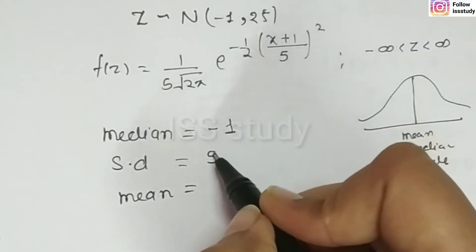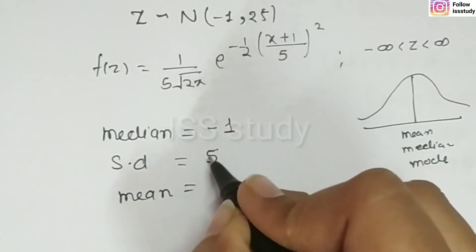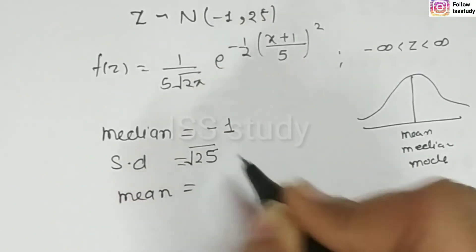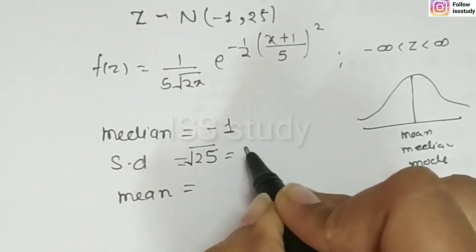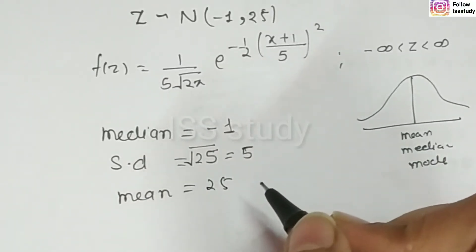Standard deviation is 5. Because, here, the variance is 25. So, standard deviation is 5. Because, the standard deviation formula is under root of variance. So, I put under root of variance. And, here, it comes to 5. And, mean, you already know that mean is 25.